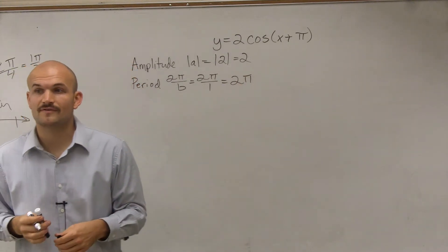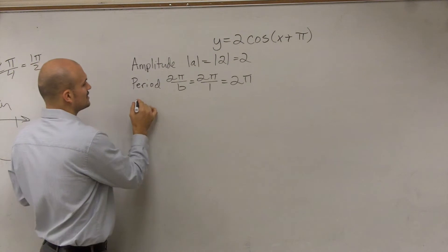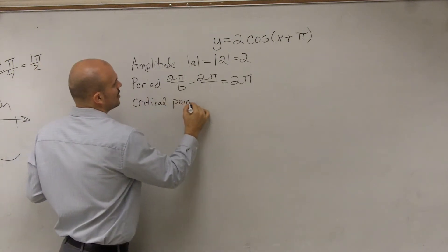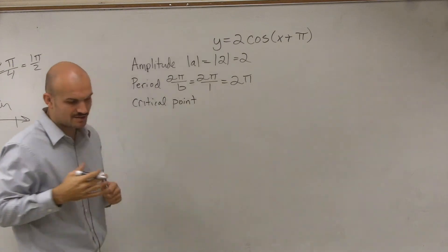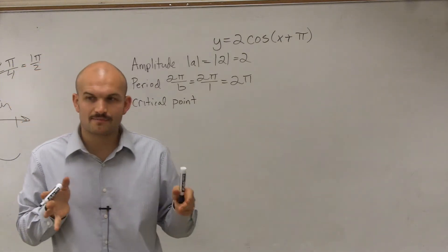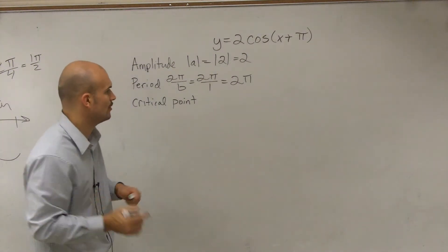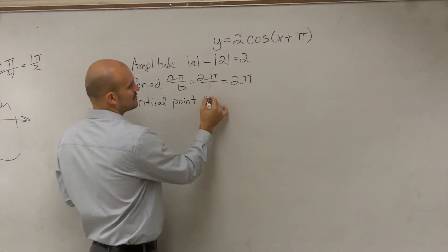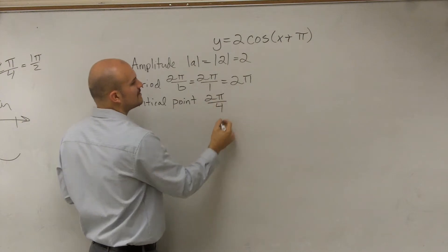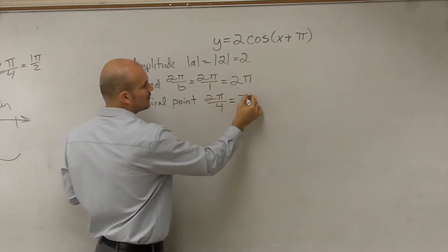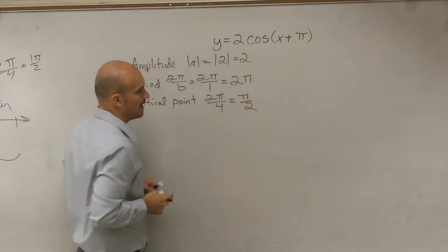Now, the next thing, after I figure out what the period is, I always like to figure out what the critical points are. When I take my period divided by 4, that's going to tell me the distance between all my critical points. So to find that distance, you just take your period and divide it by 4, which in this case we have π/2.